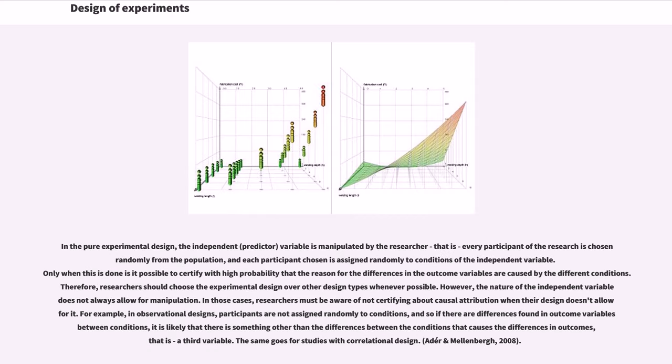In the pure experimental design, the independent predictor variable is manipulated by the researcher, that is, every participant of the research is chosen randomly from the population, and each participant chosen is assigned randomly to conditions of the independent variable. Only when this is done is it possible to certify with high probability that the reason for the differences in the outcome variables are caused by the different conditions. Therefore, researchers should choose the experimental design over other design types whenever possible.